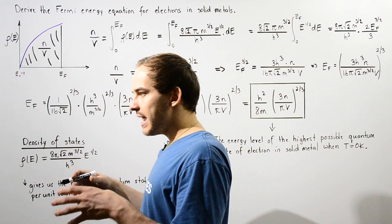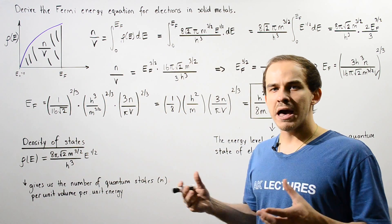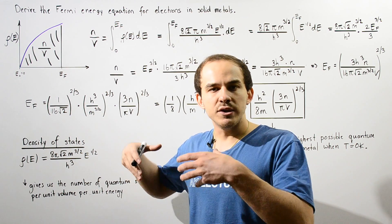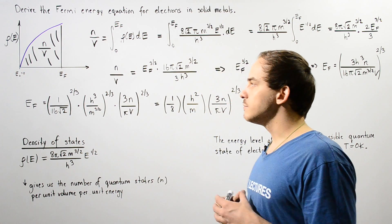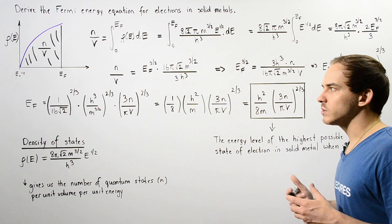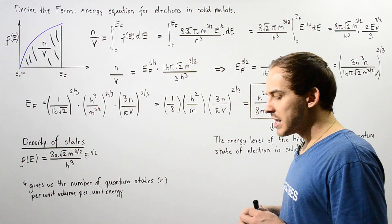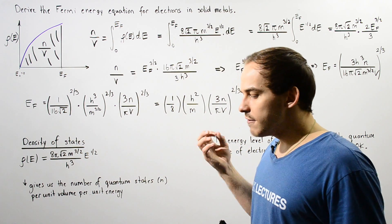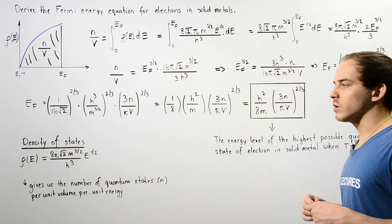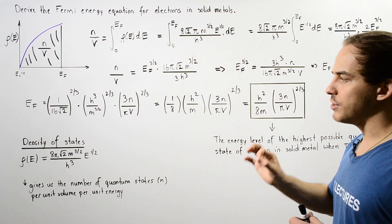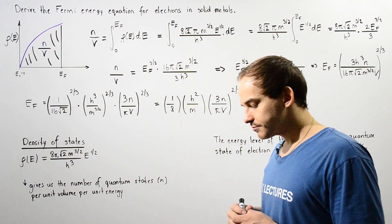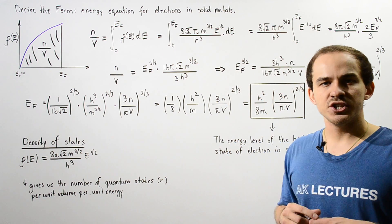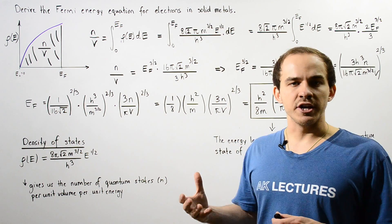We take some solid metal with a certain volume and bring it to a temperature of zero Kelvins. We want to derive the equation that gives us the Fermi energy of our electron in that situation. To derive this equation, we're going to use an earlier result.